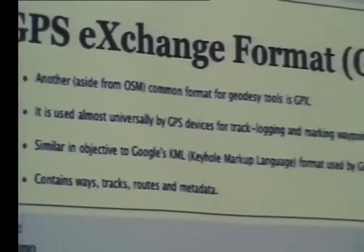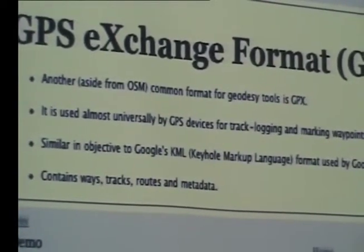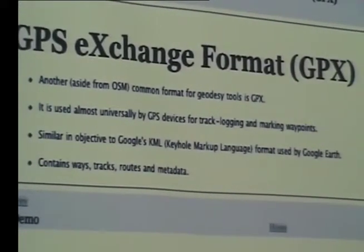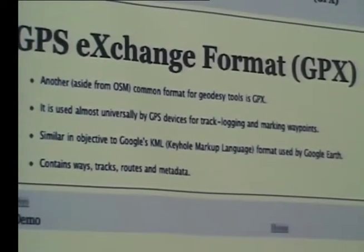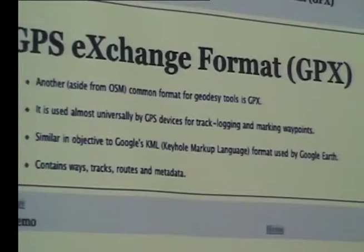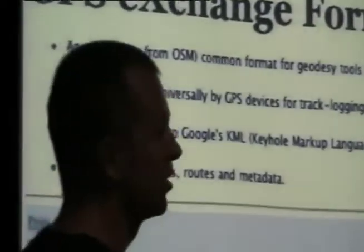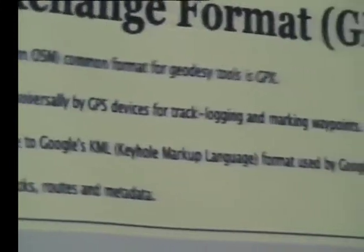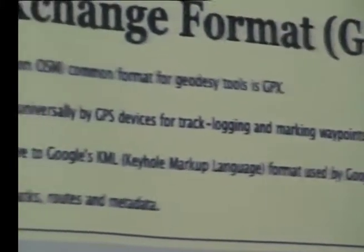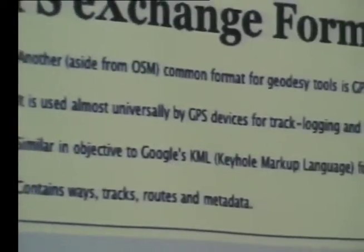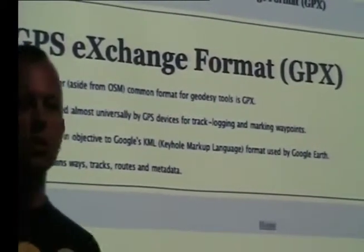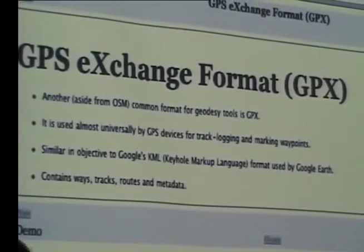Aside from OSM there's a format called GPX - GPS Exchange Format. You've probably heard of KML from Google Earth; GPX is like a non-Google, open one. This particular device track logs in GPX, so when I get home I've got a bunch of GPX files that say where I've been. It's used almost universally by GPS devices. GPX generally contains waypoints, which is a node; tracks, which is a list of nodes; routes, which is a list of tracks; and metadata about the GPX.